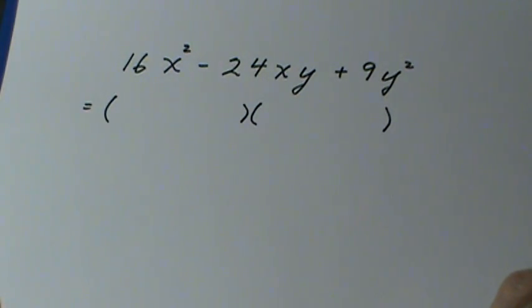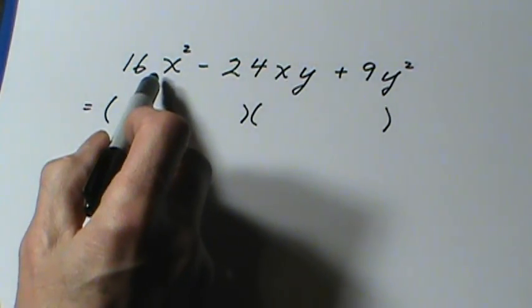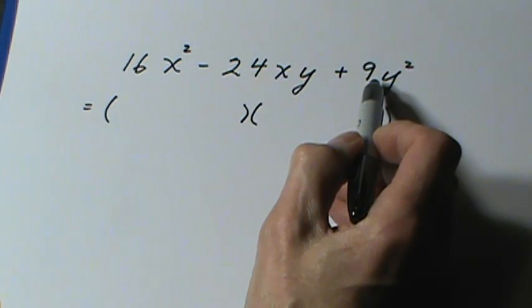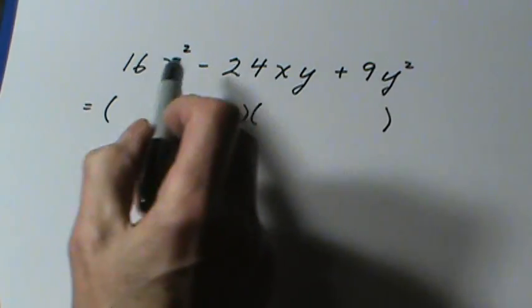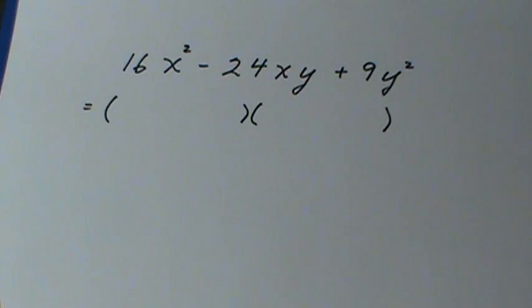This is called a perfect square trinomial, and you can recognize them by the perfect squares on both ends. This is 4x times 4x. This is 3y times 3y. And if you find that 4 times 3 gives you half of the number in the middle, this will be what is called a perfect square trinomial.